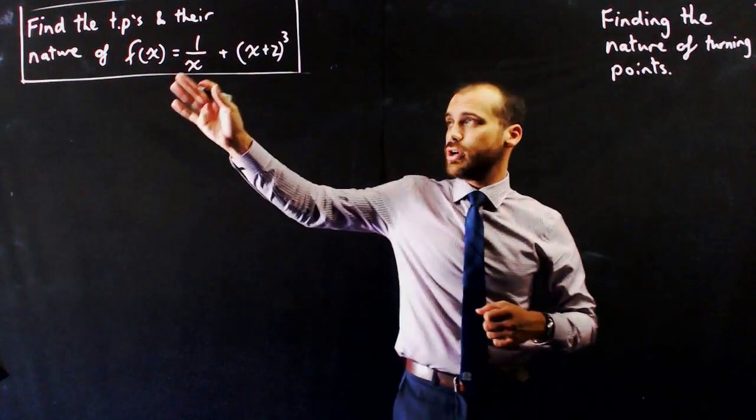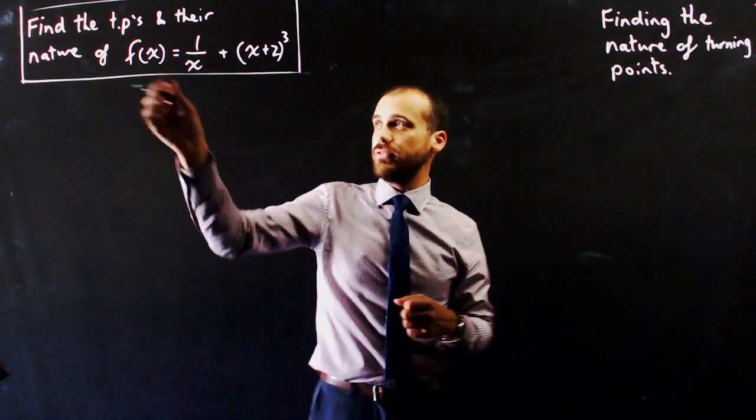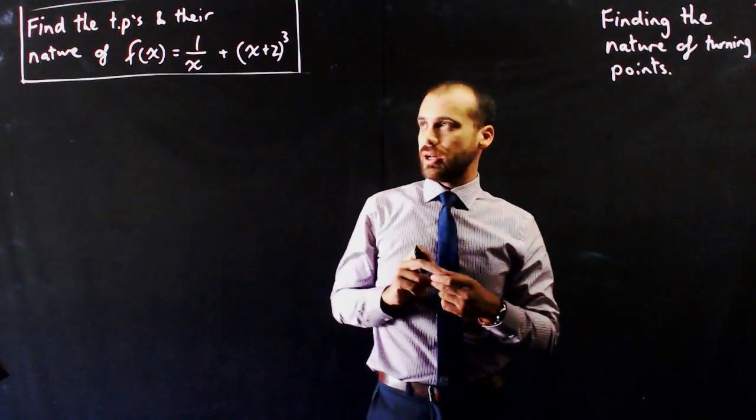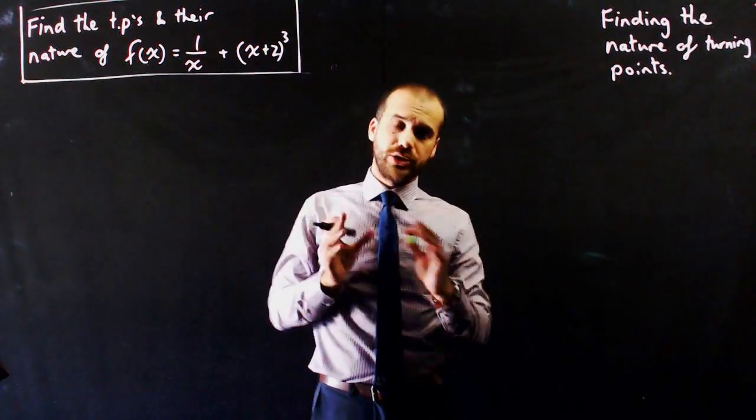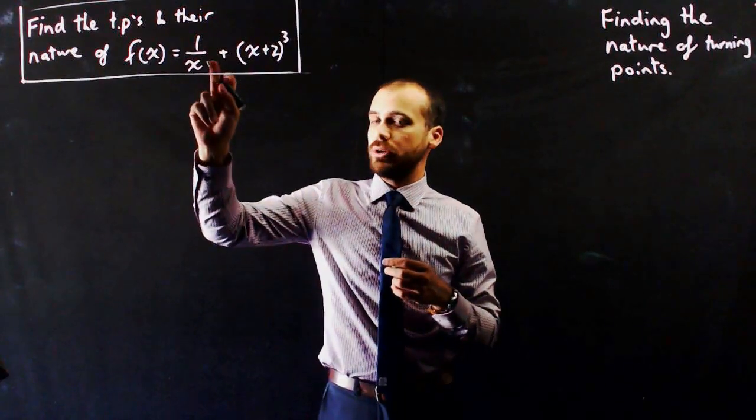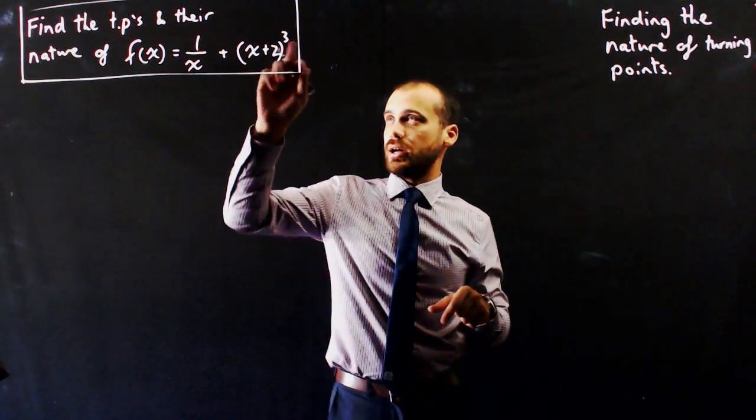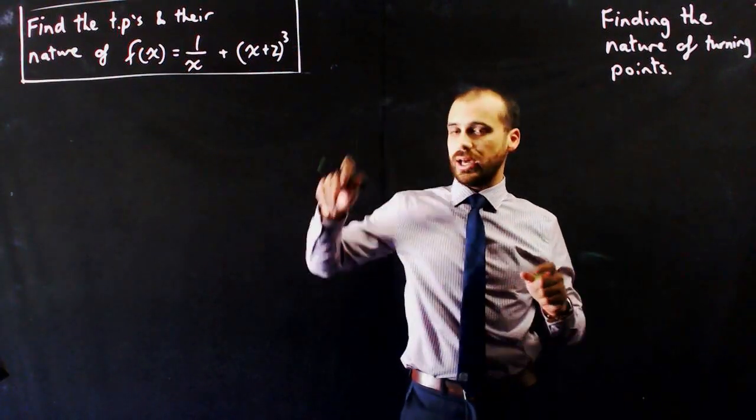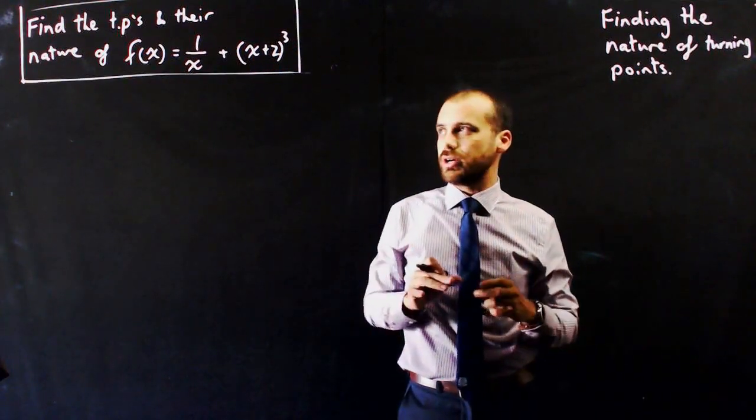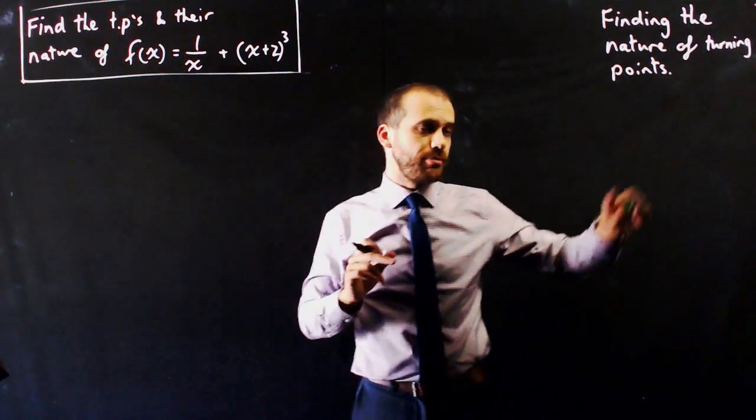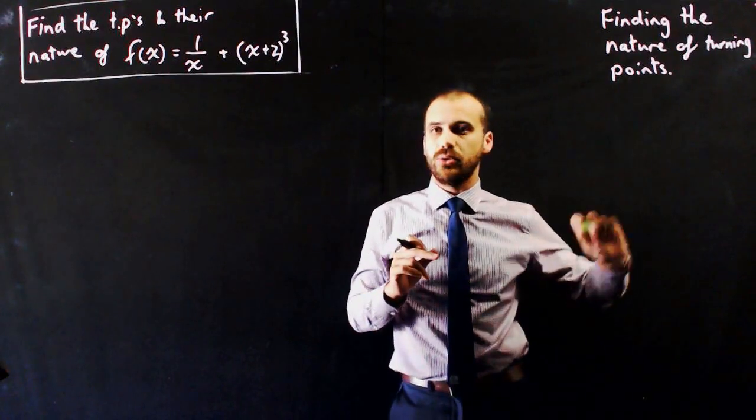So this is the question: find the turning points and their nature of f(x) = 1/x + (x+2)³. So what I've done is combine two functions that you're familiar with, a hyperbola, that's the one like this with the asymptotes, and a cubic, which goes something like that. I've combined them together and they make a really cool graph. But regardless, we need to find the turning points and we need to know whether they are maximums or minimums.